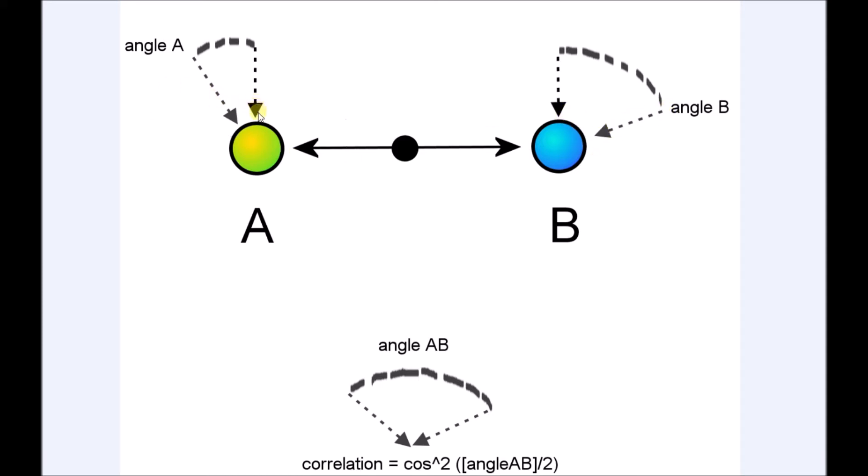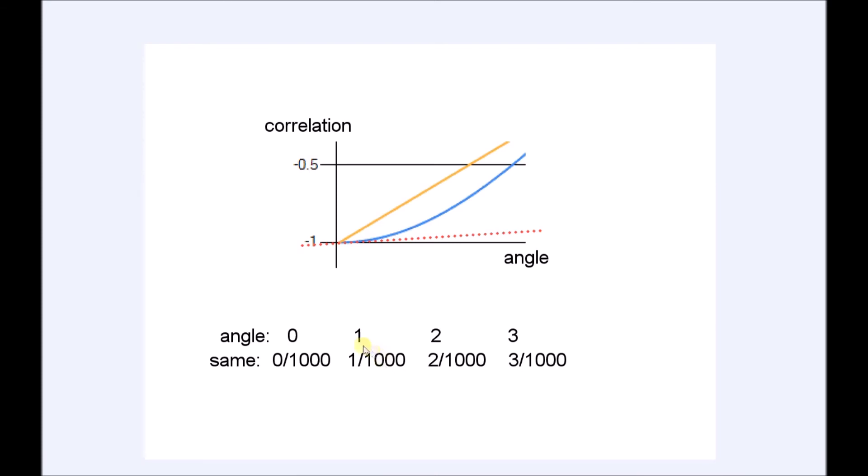But also when the angle at A is 4 degrees and the angle at B is 5 degrees, both times we have a resulting angle of 1. So if only 1 in 1000 values can change from being the same on 1 degree difference...